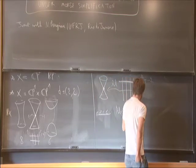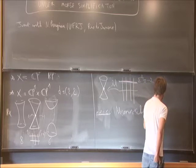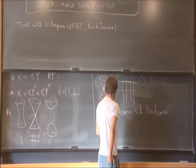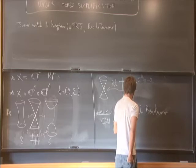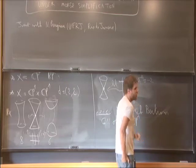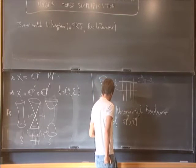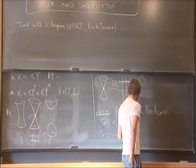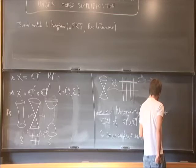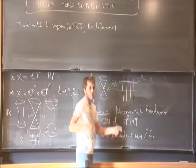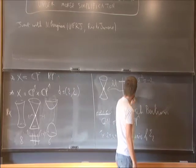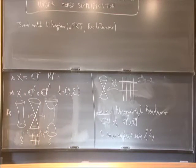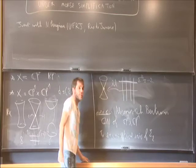So it was Abramovich and Bertram, who related Gromov-Witten invariants of P1 cross P1 to some enumerative invariants of σ2. So σ2 is the surface you obtain when you take the quadratic cone and blow out the vertex. And more or less what we want to do is obtain a real version of this formula.